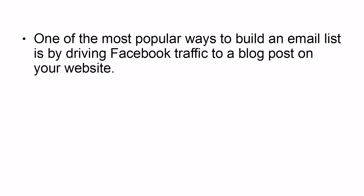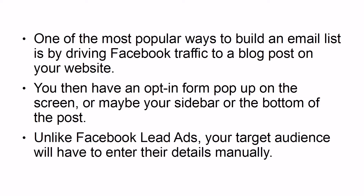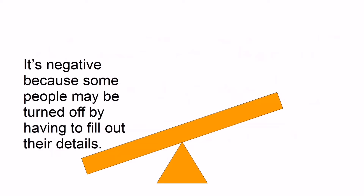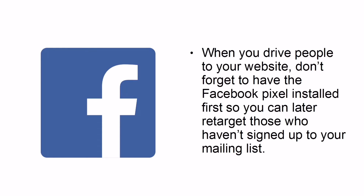Method 2: Boost your web content or blog post. One of the most popular ways to build an email list is by driving Facebook traffic to a blog post on your website. You then have an opt-in form pop up on the screen, or maybe in your sidebar or at the bottom of the post. Unlike Facebook lead ads, your target audience will have to enter their details manually. This can be positive — because the people who sign up are those most interested in your products and services — but also negative, as some people may be turned off by having to fill out their details. Don't forget to have the Facebook Pixel installed so you can later retarget those who haven't signed up.